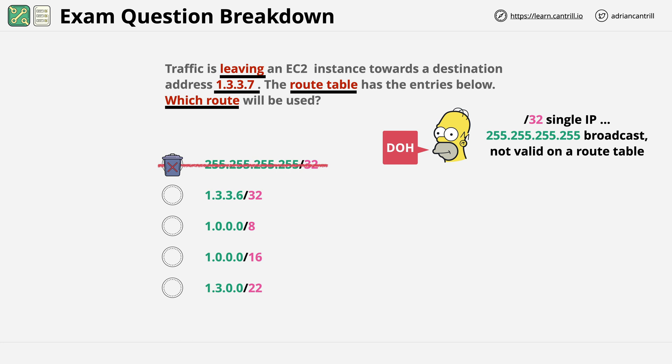The next thing that I would look at is to identify any of the answers which are obviously incorrect. Well, the second answer, let's take a look. 1.3.3.6/32. Because it's a /32, it means that it's a single IP address match. It matches 1.3.3.6 only. And so this too can be eliminated.